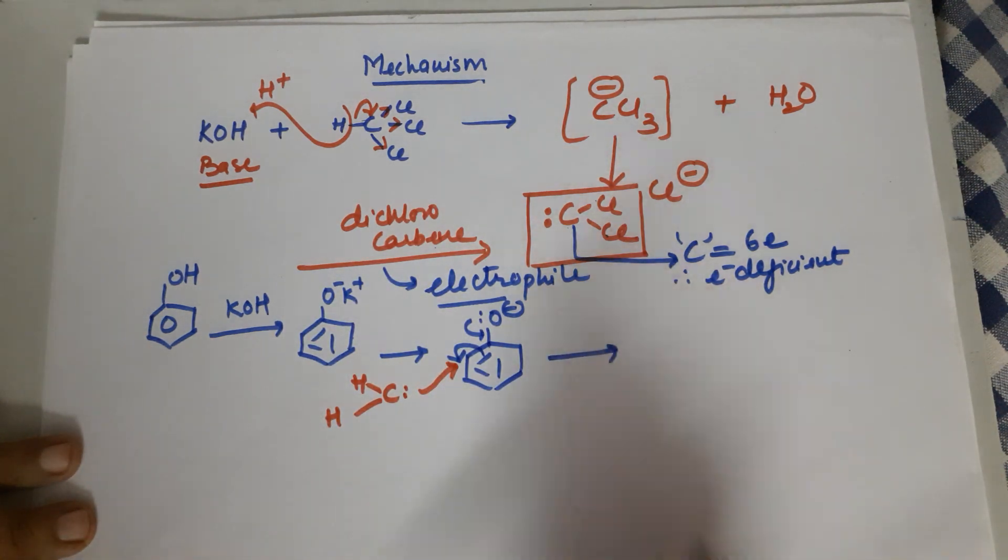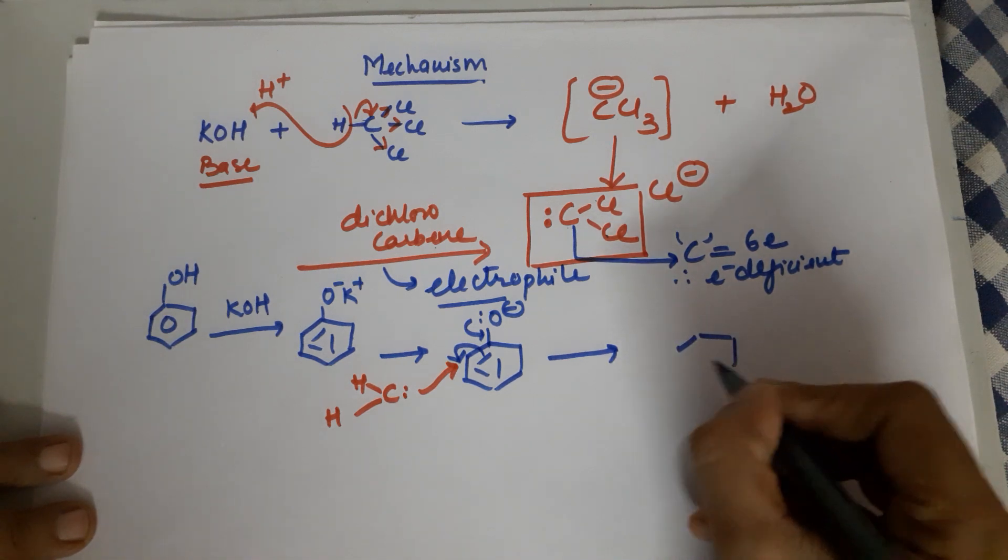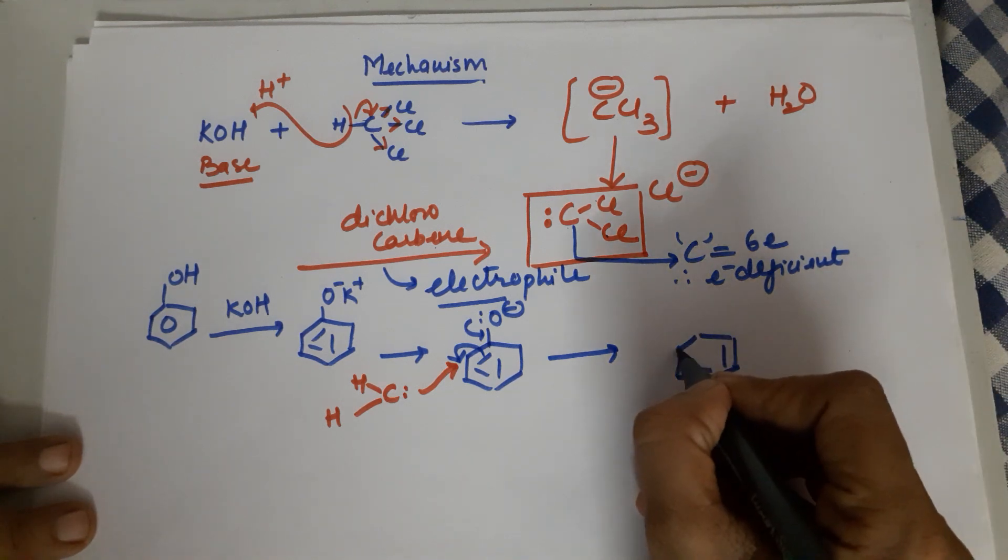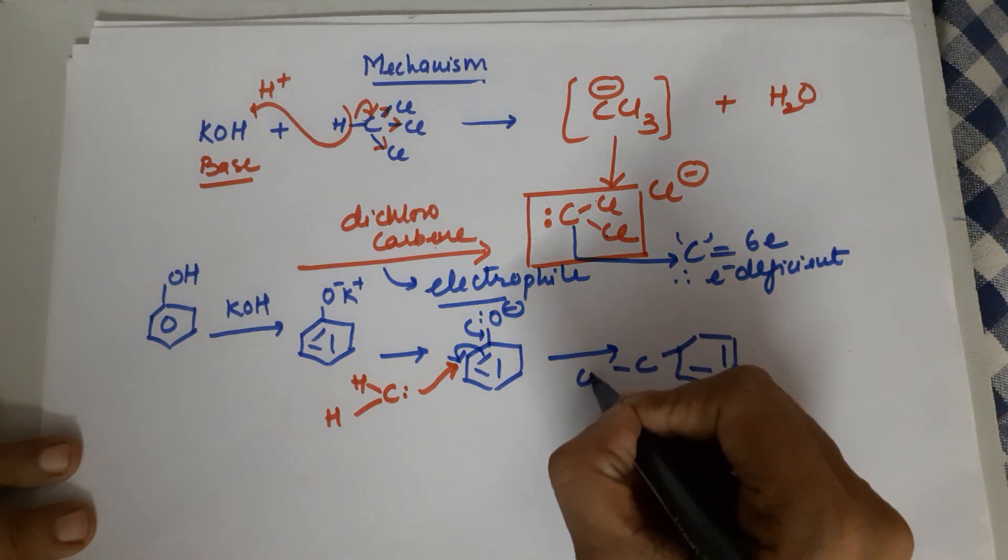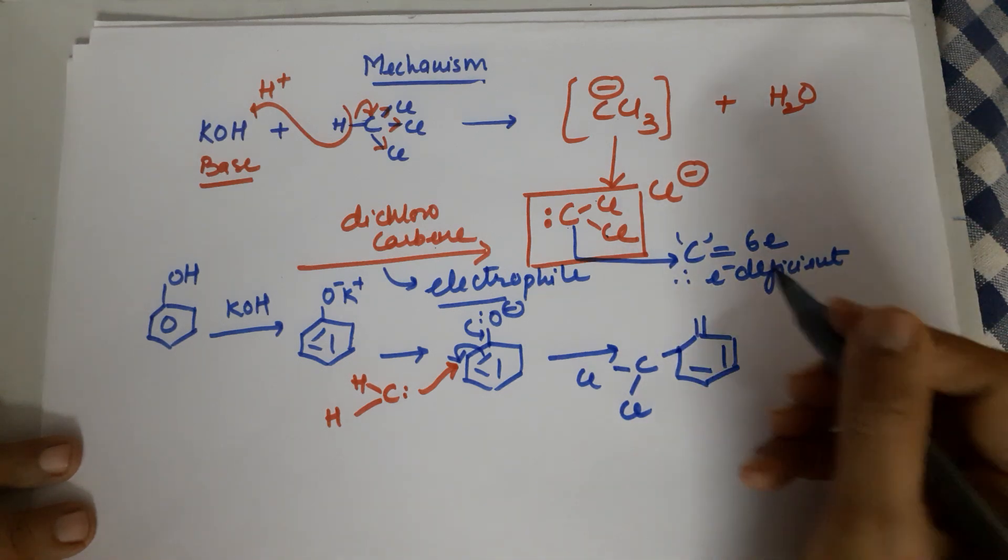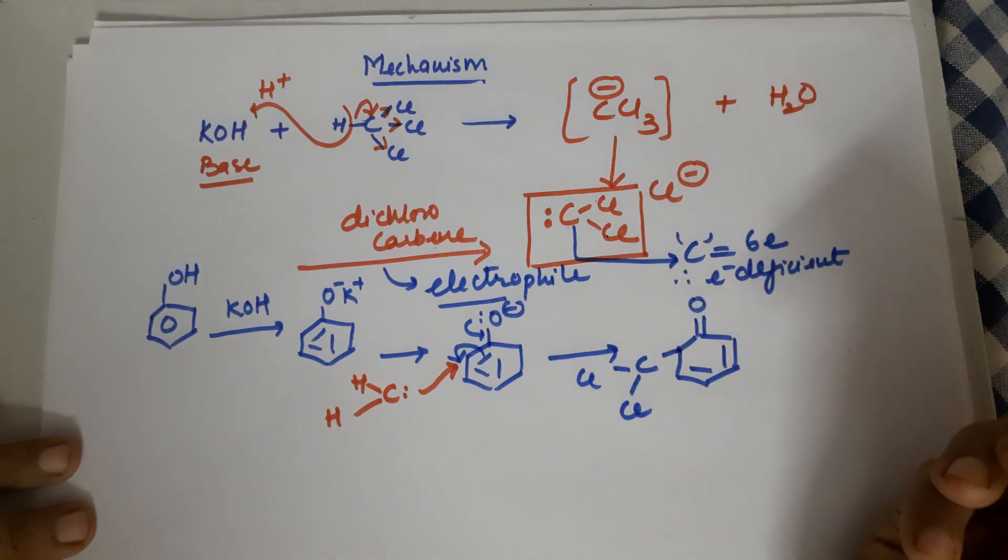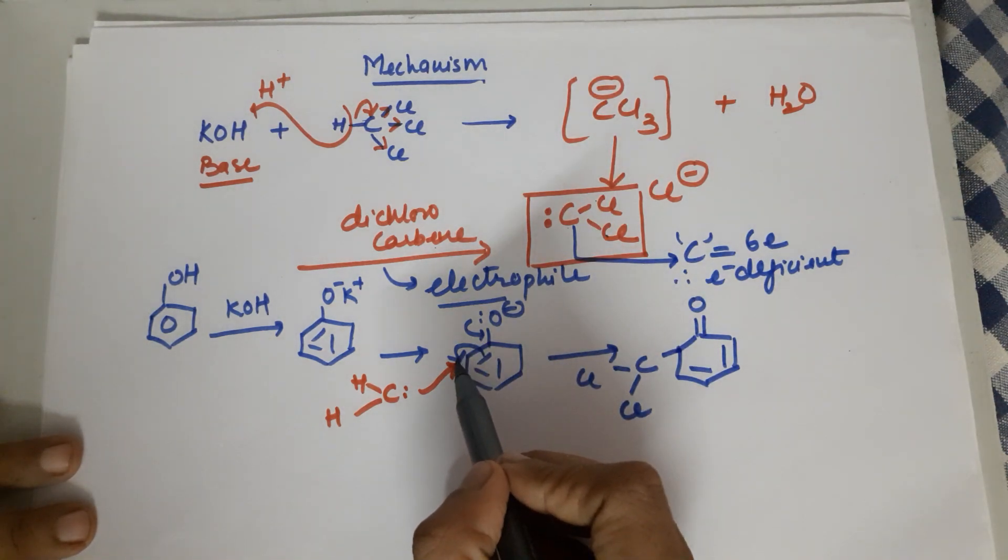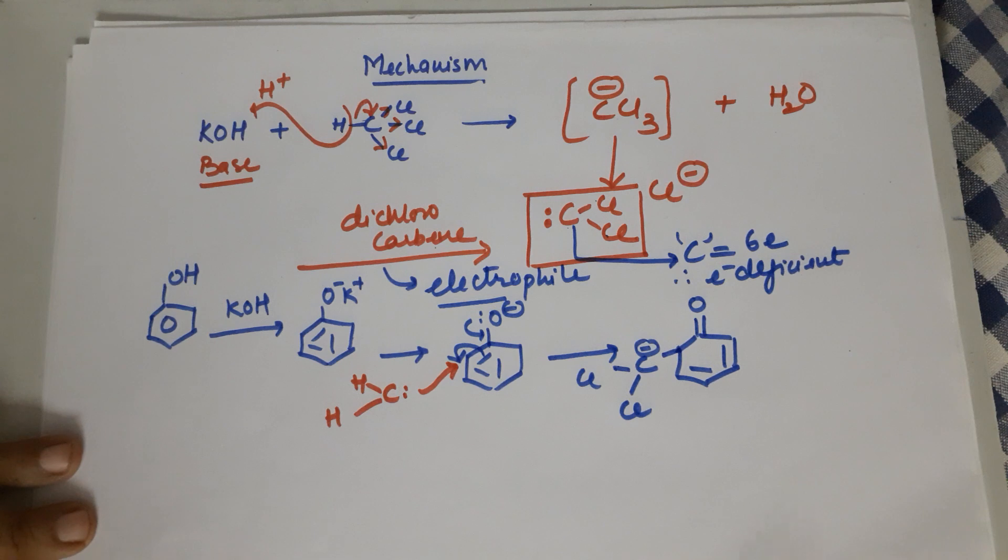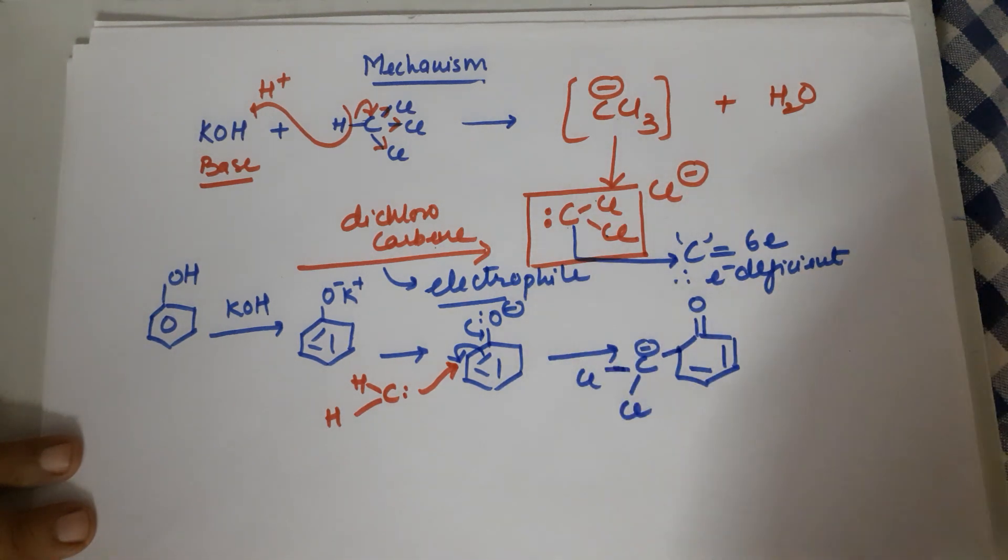Hence it would lead to the formation of the benzene remains as it is. These two bonds are not affected. Your CCl2 comes and attacks here while here you get a double bond with an oxygen. But you had a negative charge here. So this negative would go to the carbon of the dichlorocarbene.